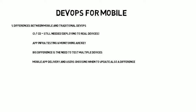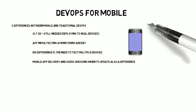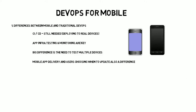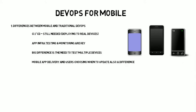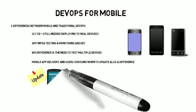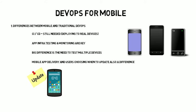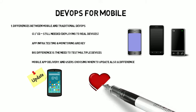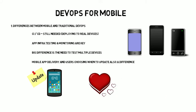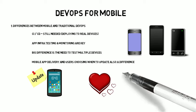Mobile app delivery and users choosing when to update is also a key difference. You don't get to tell the users when to update — they will choose when and if to update on their phones, mobile devices, tablets, etc. We'll look at that more in the challenges section. And another key area is that agile development is still really at the very heart of mobile DevOps. Continuous validation of quality and working closely with your customer and user are things that remain essential.